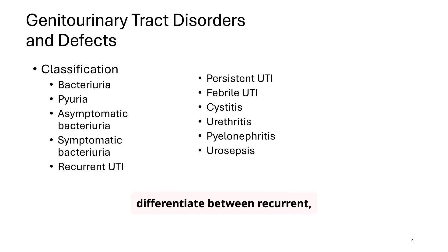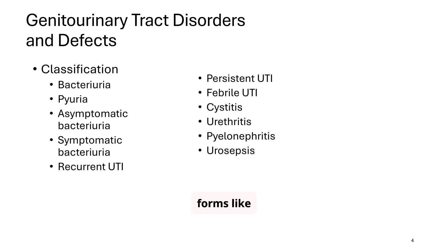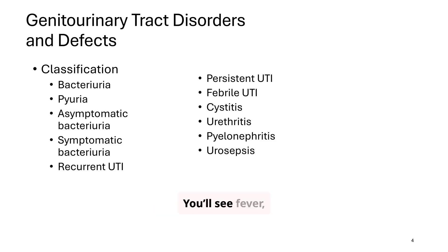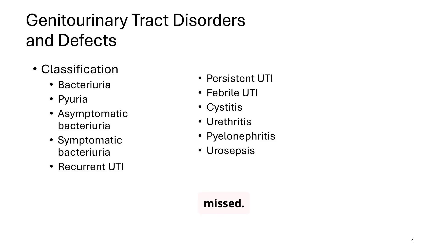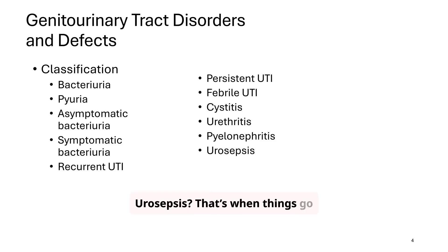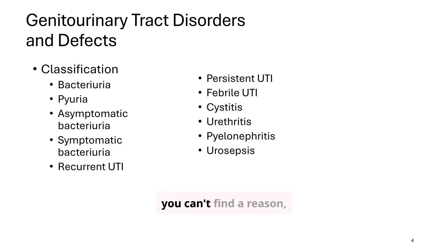UTIs can be classified in several ways, including bacteriuria, pyuria, and whether they are symptomatic or asymptomatic. We also differentiate between recurrent, persistent, febrile, and more severe forms like pyelonephritis and urosepsis. Symptomatic UTIs present with fever, pain, and burning. Asymptomatic UTIs are sneaky and often missed. Pyelonephritis is an upper tract infection — think fever and back pain. Urosepsis is when things go south fast. If the child has a high fever and you can't find a reason, always consider a UTI.